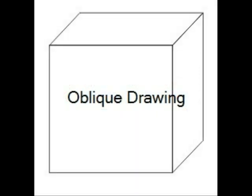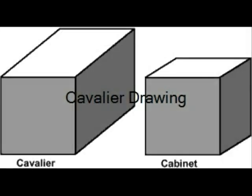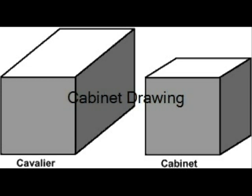There are two different kinds of oblique drawings: cabinet and cavalier. Cabinet shows half depth and cavalier shows full depth. The cavalier drawing shows more of the top view of the drawing instead of the side, while a cabinet drawing shows more of the side view instead of the top view.